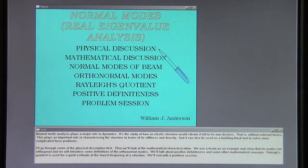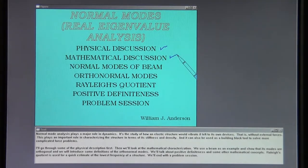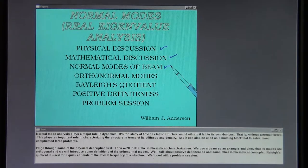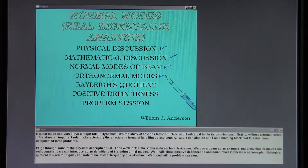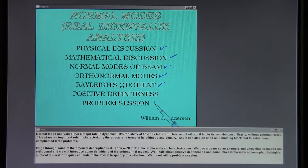I'll go through some of the physical description first, then we'll look at the mathematical characterization. We'll use a beam as an example and show that its modes are orthogonal, and introduce some definitions of the orthonormal modes. We'll talk about positive definiteness and other mathematical concepts. Rayleigh's Quotient is used for a quick estimate of the lowest frequency of a structure. We'll end with a problem session.